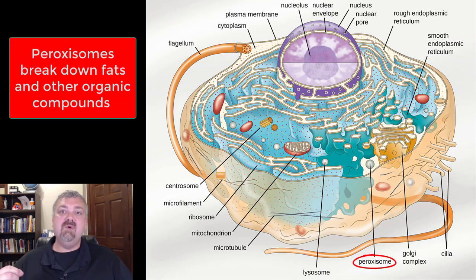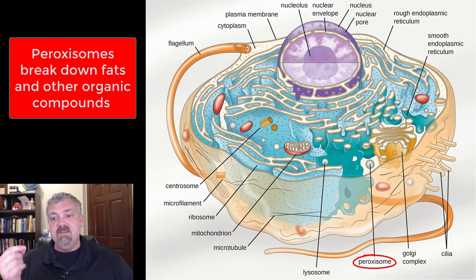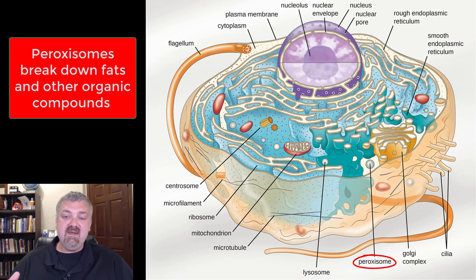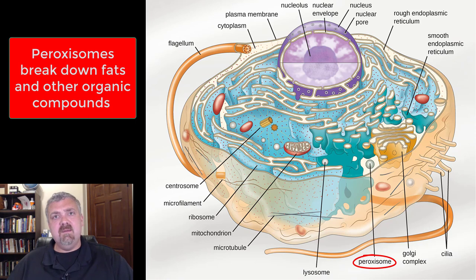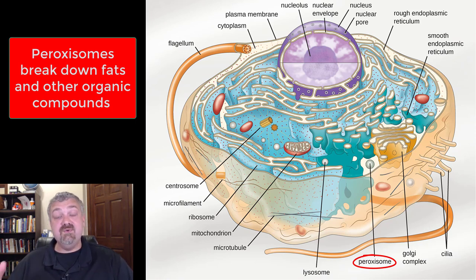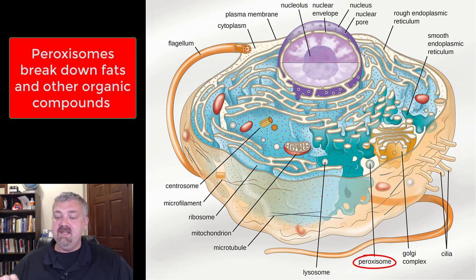Peroxisomes help break down fats and other organic compounds. The key thing is they not only do that, but they neutralize the toxic byproducts produced during that breakdown — because when fat breaks down, it does produce toxic products. The peroxisome handles both tasks, which is part of the reason our cells don't age too quickly.